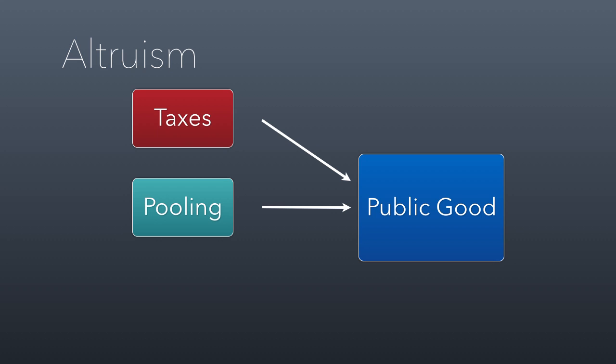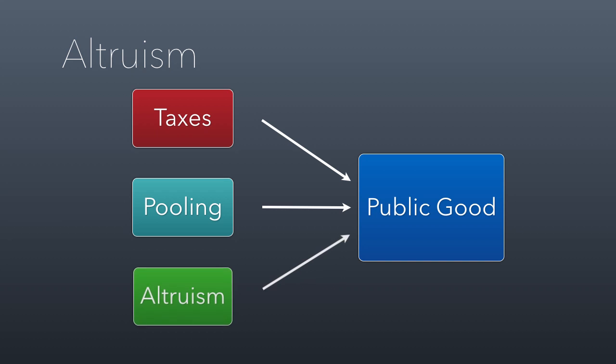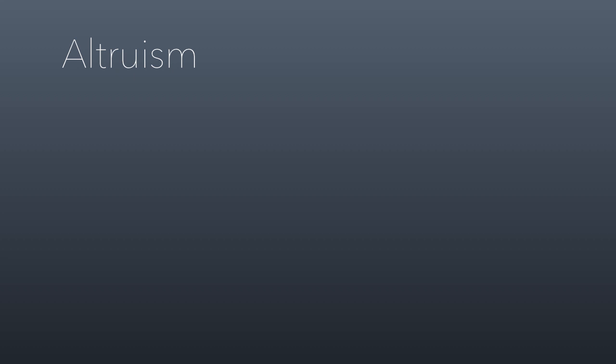The third funding source is altruism, which is unique because people voluntarily pay for the public good but aren't necessarily the ones who get it. Also, people who don't contribute altruistically can still get access to the public good. That's what makes altruism unique — it's a voluntary form of funding public goods that doesn't require payment to have access. In fact, paying for it doesn't even guarantee access. If I donate to a soup kitchen, I'm contributing to the public good but I'm not eating there.